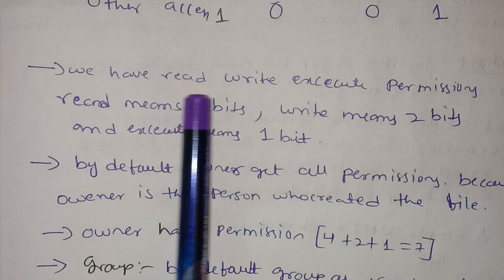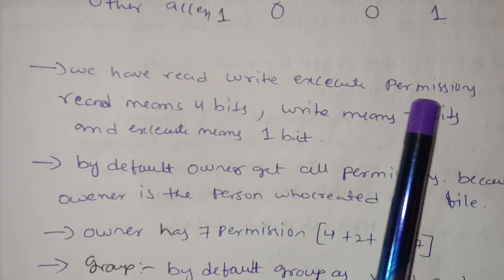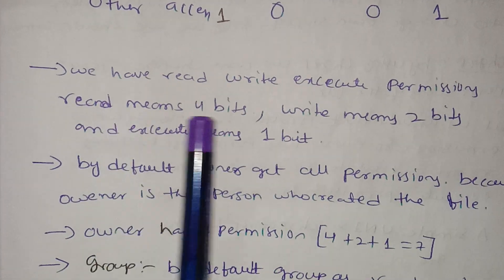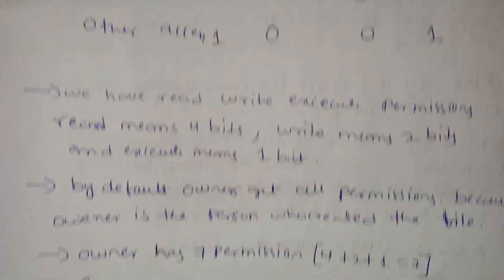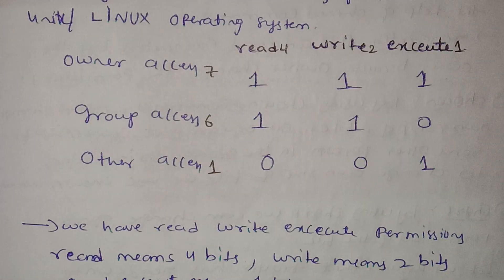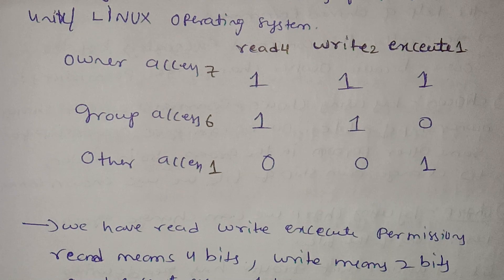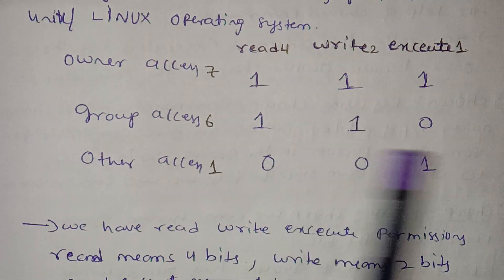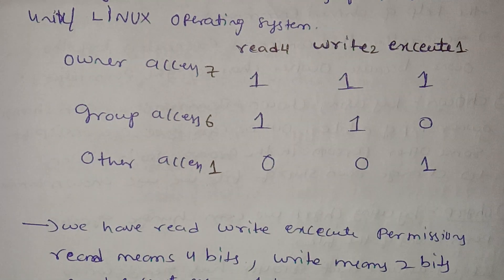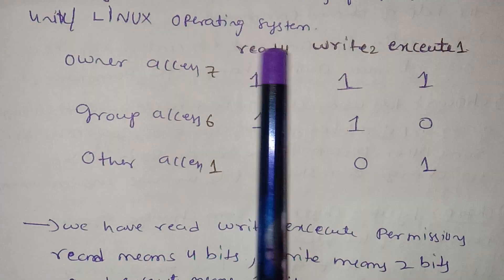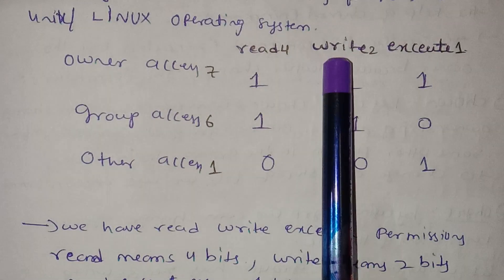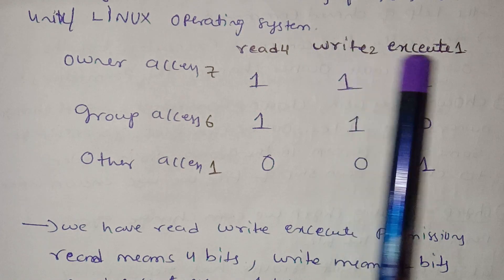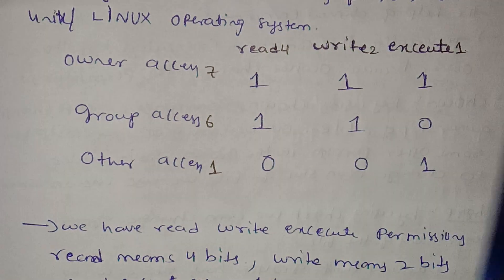We have three permissions: read, write, and execute. Read means four bits. Write means two bits. Execute means one bit.